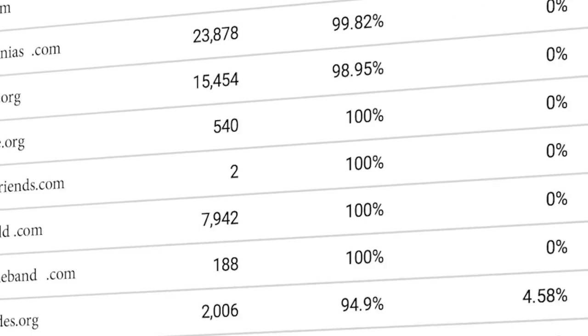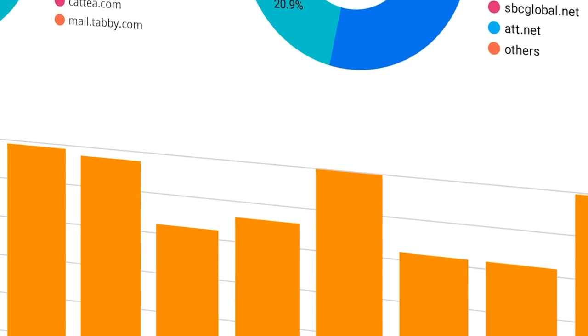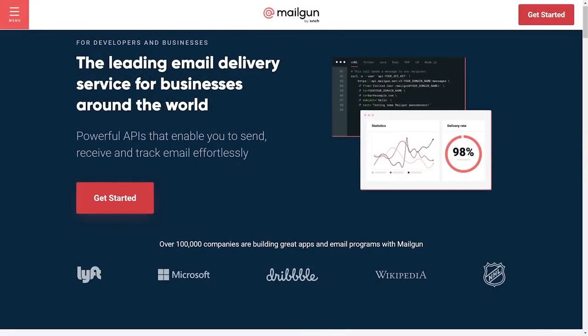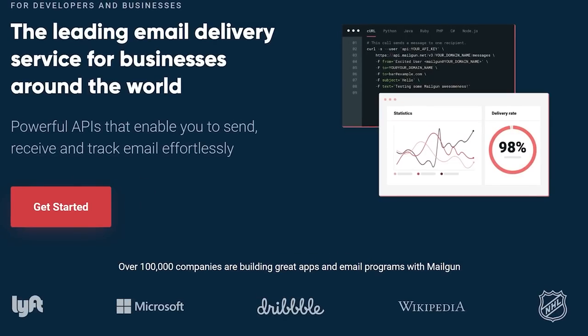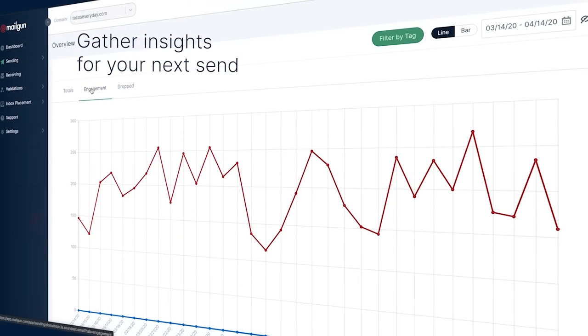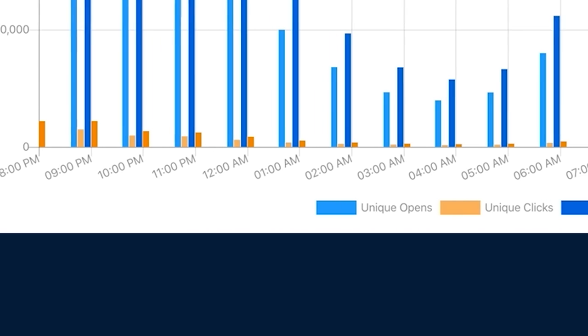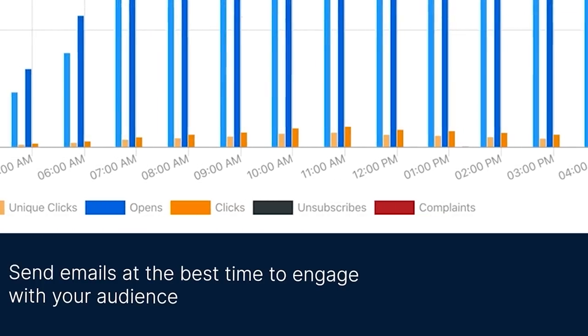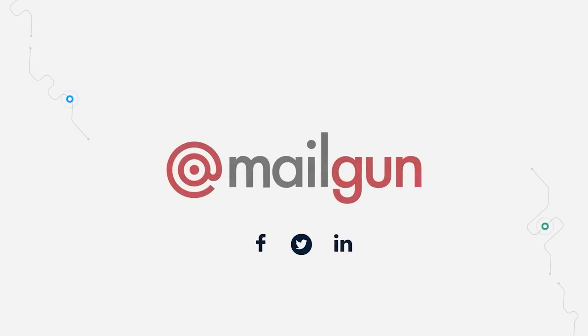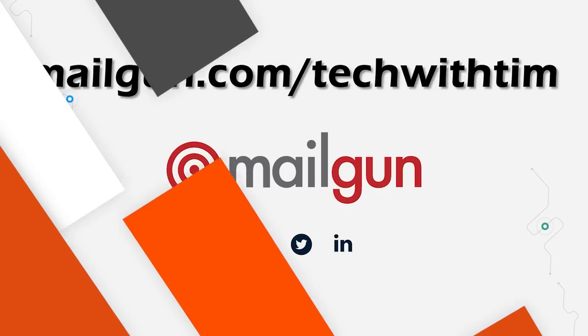Mailgun controls the entire email lifecycle from pre-deployment through delivery of over 240 billion emails per year for companies like DHL, Wikipedia, Lyft, and Microsoft. Better yet, Mailgun send time optimization automatically finds the ideal time to send emails for each individual recipient to improve engagement. Thank you again to Mailgun for sponsoring this video. Make sure to try Mailgun today by using my link mailgun.com slash tech with Tim.